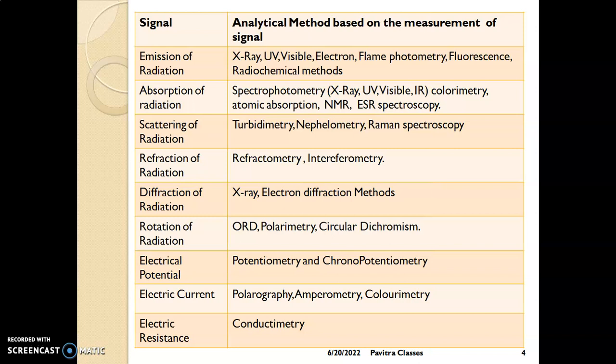Analytical methods can be classified based on the measurement of the signal generated. Emission of radiation occurs in X-ray, UV-Visible, electron, and flame photometry methods. Absorption of radiation is done in UV-Visible and IR spectrophotometry. Scattering of radiation is used in colorimetry, AAS, NMR, and ESR. Diffraction of radiation is used in X-ray and electron diffraction methods.